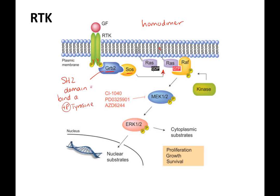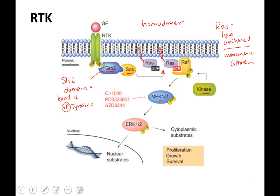RAS is also lipid anchored. It's our monomeric G protein, which means it is active when it binds GTP. When it's active, it binds to another protein called RAF, which has phosphate groups from this kinase. The signal goes on to MEK1/2, which is another kinase, to ERK1/2, which is another kinase.